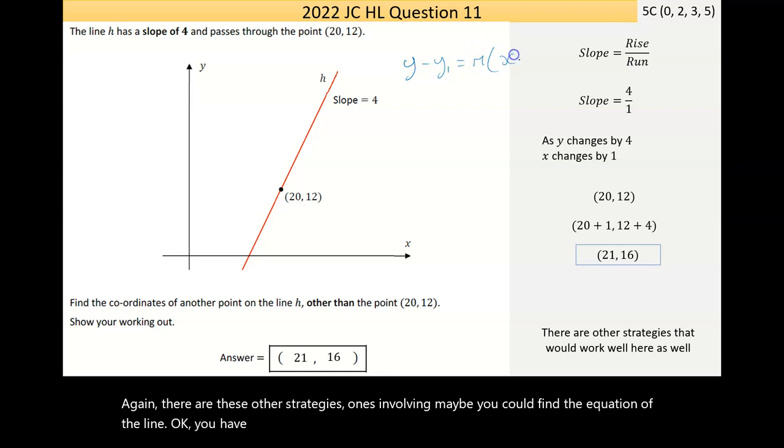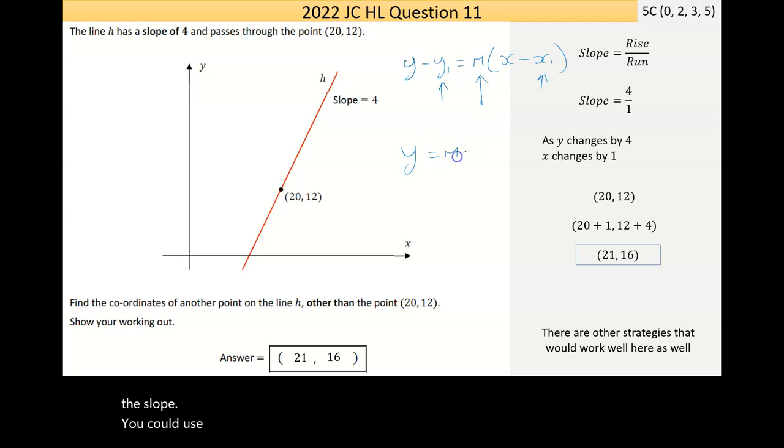Ones involving maybe you could find the equation of the line. You have the information needed. You have a point, the (20, 12), and you have the slope. You could use y equals mx plus c. Actually, could you? I think you could. I just don't want to spend the time elaborating on it right now, but there are other strategies.